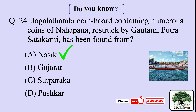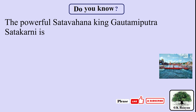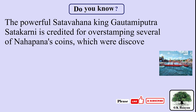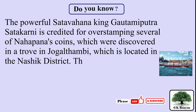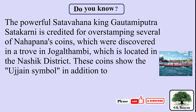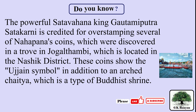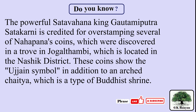The right answer is A. Nasik. The powerful Satavahana king Gautami Putra Satkarni is credited for over-stamping several of Nahapana's coins, which were discovered in a trove at Jogal Thambi located in the Nasik district. These coins show the Ujjain symbol in addition to an Aak Chaitya, which is a type of Buddhist shrine.